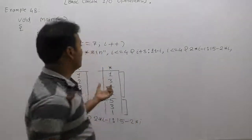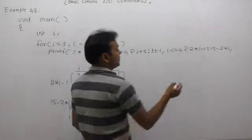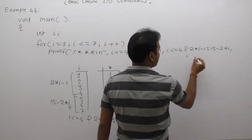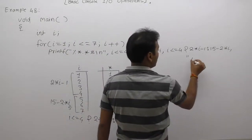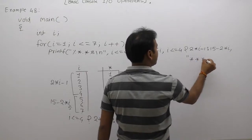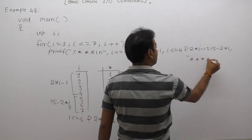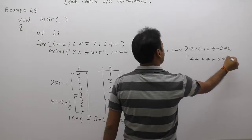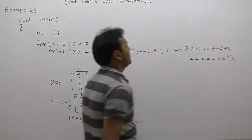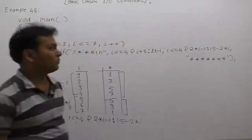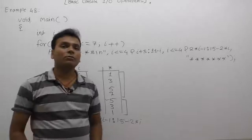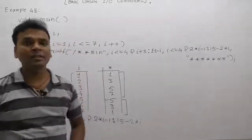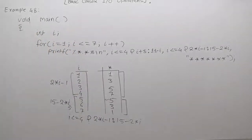The maximum number of stars required — we must supply as the third argument — is seven. This is the final printf statement to display the given required pattern in diamond shape. Clear, so thank you.